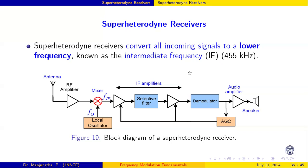We will see the important blocks in this superheterodyne receiver. The first one is the antenna, which picks up the signal. Initially we have an RF amplifier, usually called a low noise amplifier. Then there is a mixer with two inputs: the RF amplifier output and a local oscillator output. The output is a frequency called the intermediate frequency.